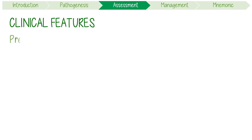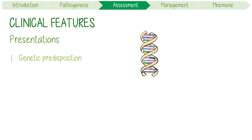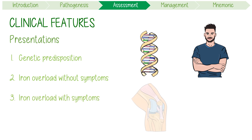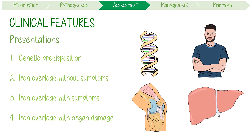The clinical features of the disease are based on how advanced it is, and patients can present in one of four ways: one, a genetic predisposition without abnormalities; two, iron overload without symptoms, found incidentally; three, iron overload with symptoms like arthritis as the presenting complaint; or four, iron overload with actual organ damage like cirrhosis.